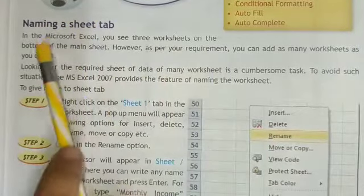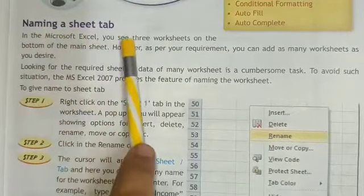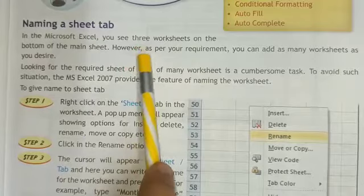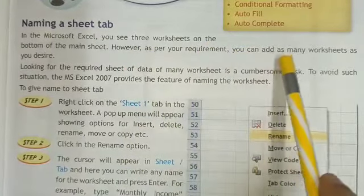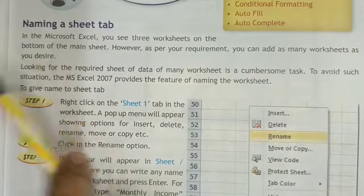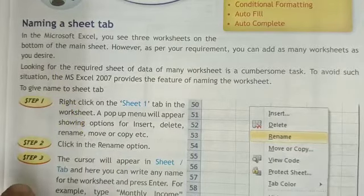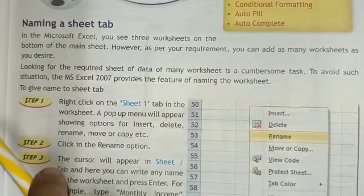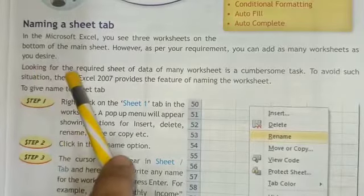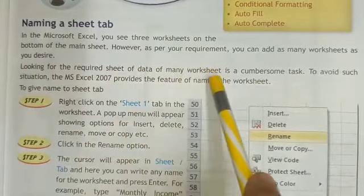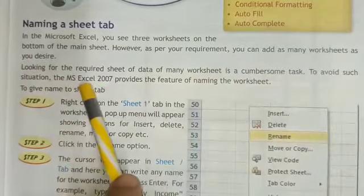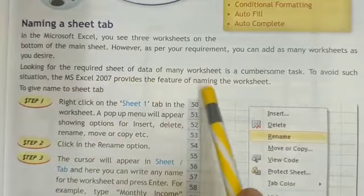Naming a Sheet Tab. In Microsoft Excel, you see three worksheets at the bottom of the main sheet by default. However, as per your requirement, you can add as many worksheets as you desire. Looking for the required sheet among many worksheets is a difficult task. To avoid such a situation, MS Excel 2007 provides the feature of naming the worksheet.